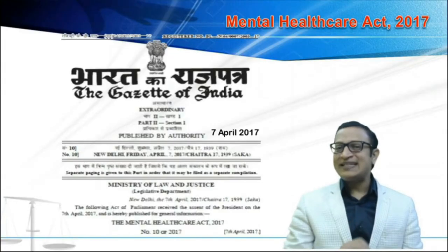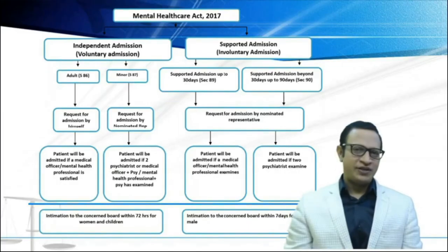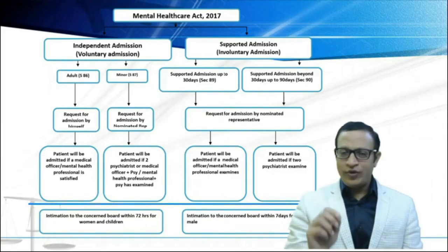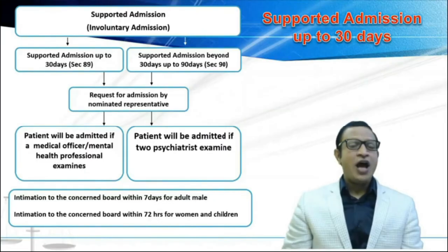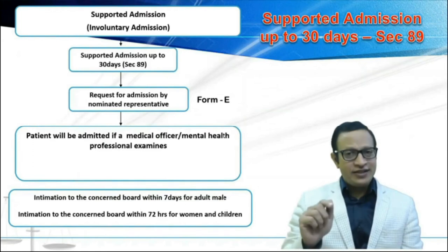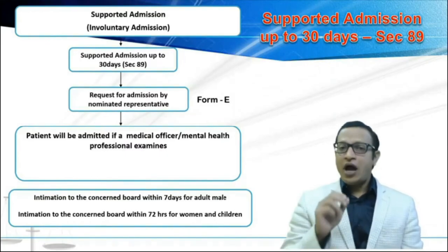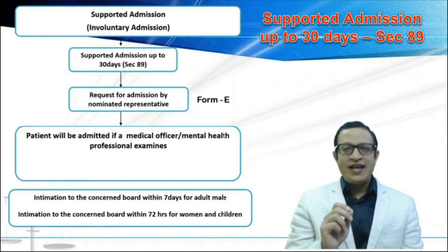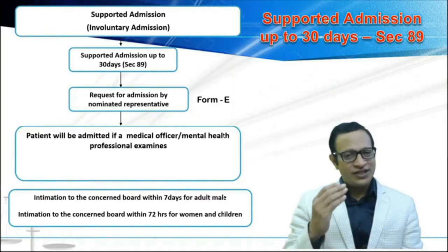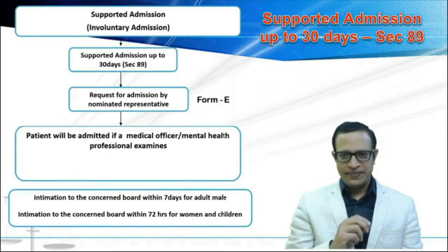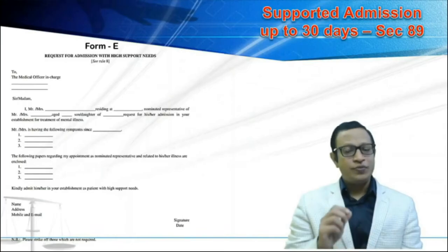This video discusses supported admission under Mental Health Care Act of 2017. There are two types of supported admission: section 89 for up to 30 days, and section 90 for beyond 30 days. This video focuses on section 89. For section 89, an NR gives a request — an application in form E — to the medical officer of the mental health establishment. The form is available in all mental health establishments and should be provided free of cost.